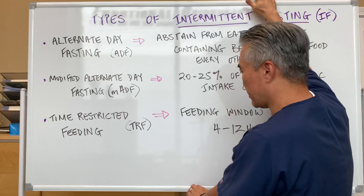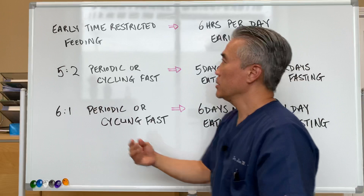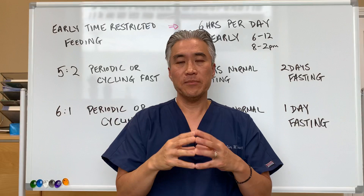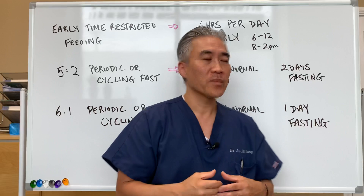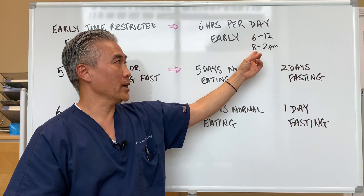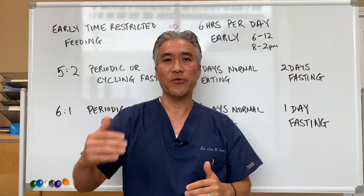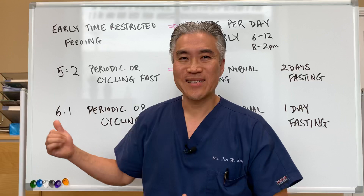There are other methods of feeding where you do early time-restricted feeding. You pick a time frame, maybe 4 to 6 hours, that you eat early in the morning. That time frame can be anywhere from 6 a.m. to noon, or 8 a.m. to 2 p.m. You pick the hours early on, and then you fast for the rest of the day, only drinking water.